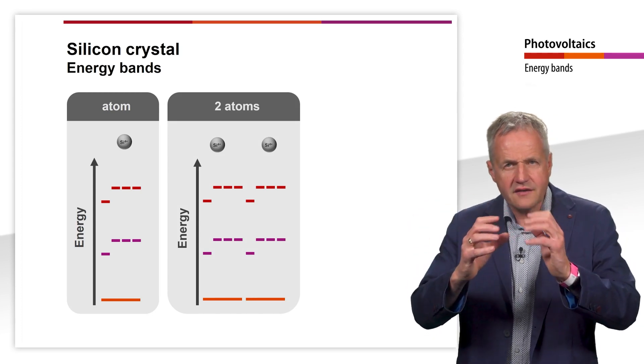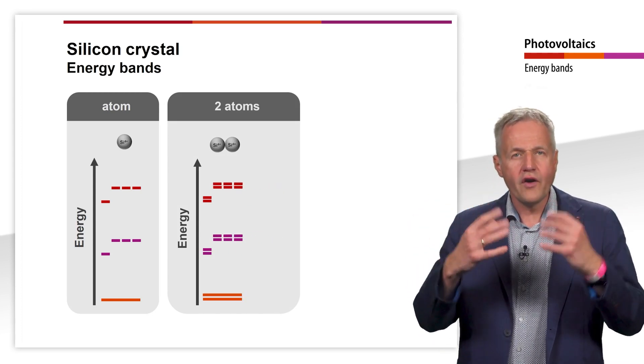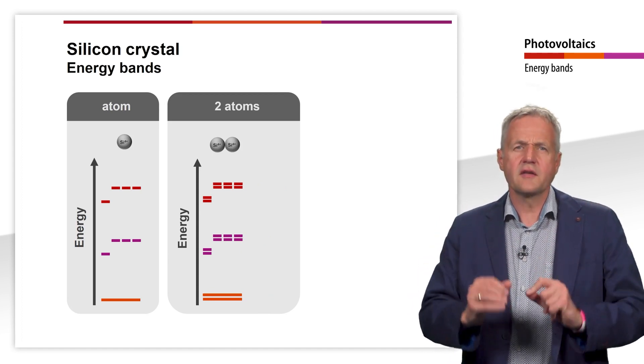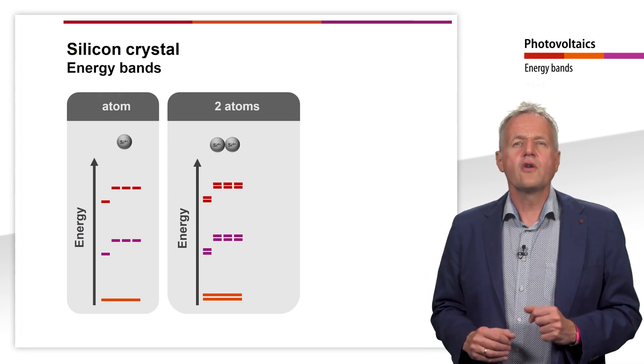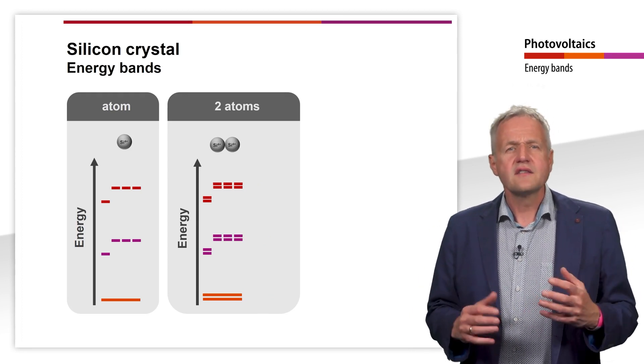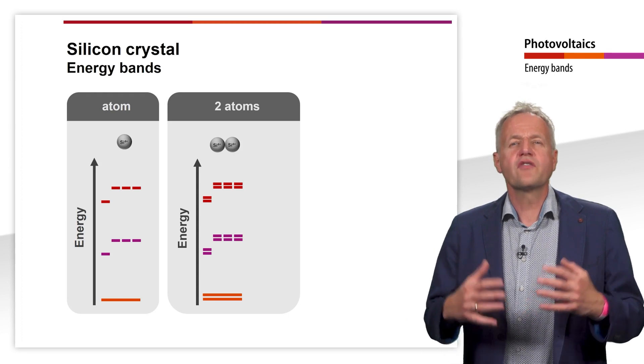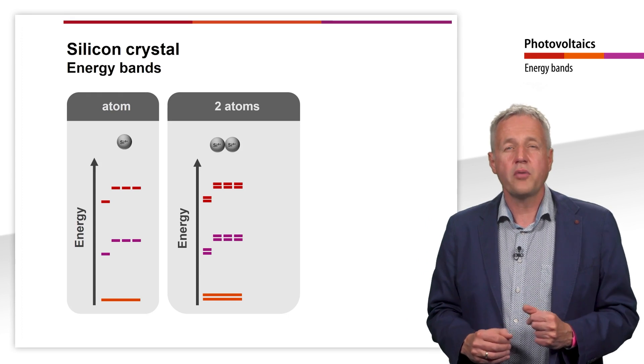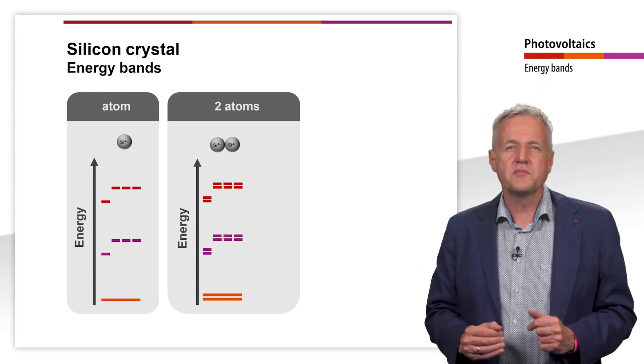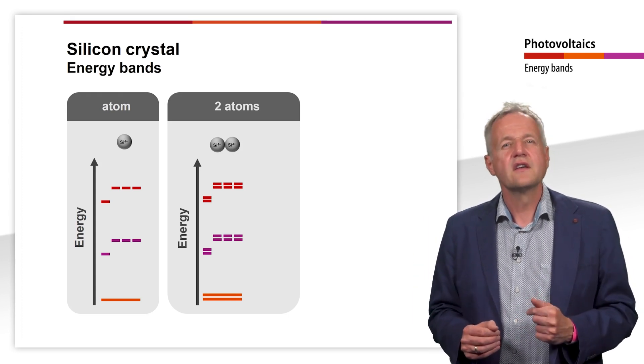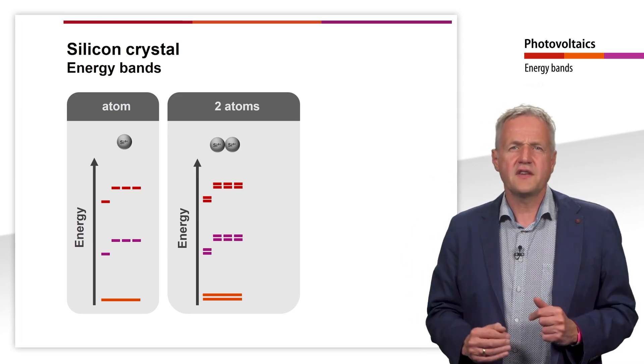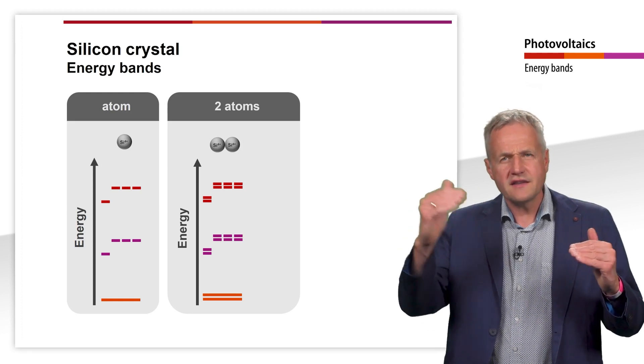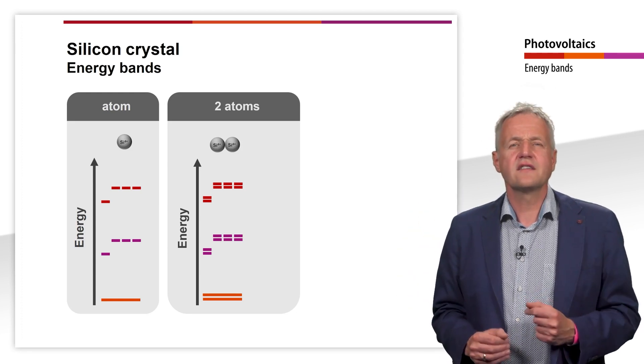However, if we bring them very close together, their orbitals overlap. The electrons of this two silicon molecule can no longer occupy the energetically most favorable position, because they are already occupied and, based on the Pauli principle, must not be occupied twice. This leads to the splitting of the energy levels. So, we now have twice as many energy states as in a single atom.